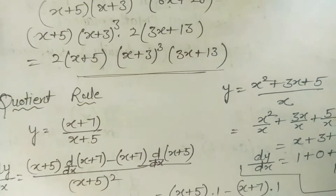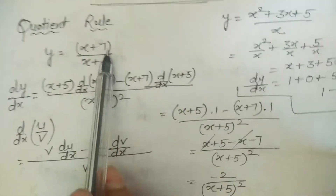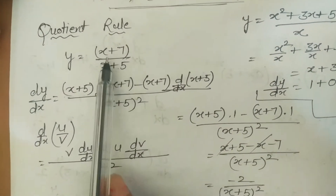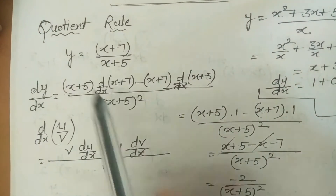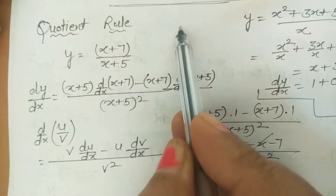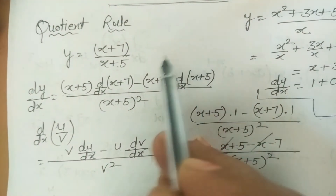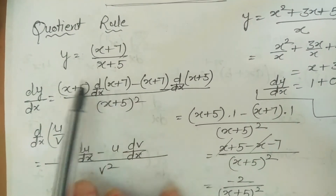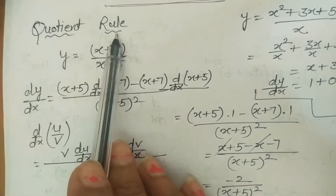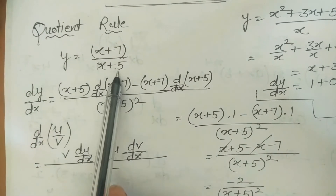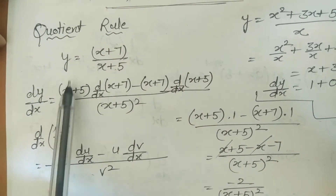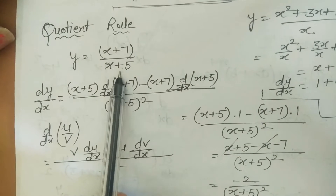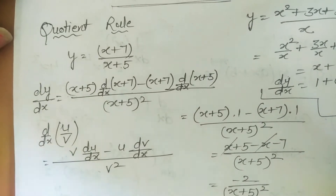Now a question involving the quotient rule: find the derivative of (x+7)/(x+5). We cannot differentiate numerator and denominator separately — that is not a valid rule. Since both numerator and denominator are functions of x, we apply the quotient (u/v) rule.